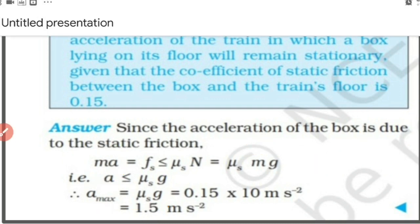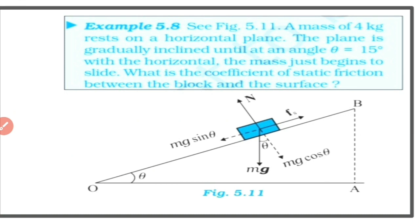Now coming to the next question, Example 5.8 (Figure 5.11): a mass of 4 kilogram rests on a horizontal plane. The plane is gradually inclined until at an angle θ equal to 15 degrees with the horizontal, the mass just begins to slide. What is the coefficient of static friction between the block and the surface? This case is related to the angle of repose — the mass just begins to slide at θ equal to 15 degrees, so 15 degrees is the angle of repose.